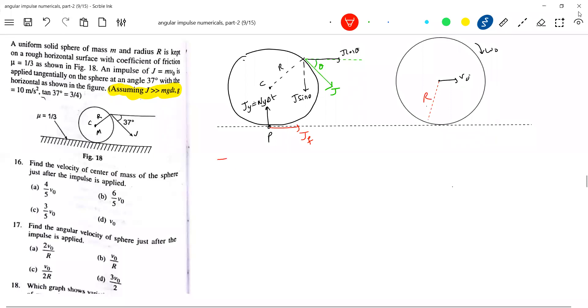Now, what is J sin theta? Jy is equal to J sin theta. What is Jf? Equal to mu Jy, impulsive friction. What is the net impulse acting on the rigid body along x axis? It should be equal to J cos theta plus Jf should be equal to m v naught. Then what about the angular impulse? Angular impulse setup is J into r minus Jf into r should be equal to Ic omega naught.